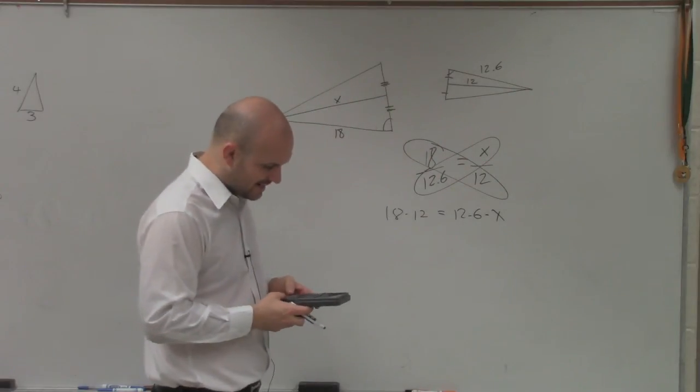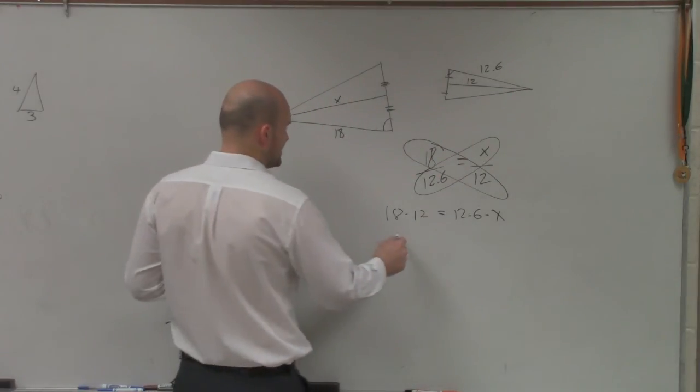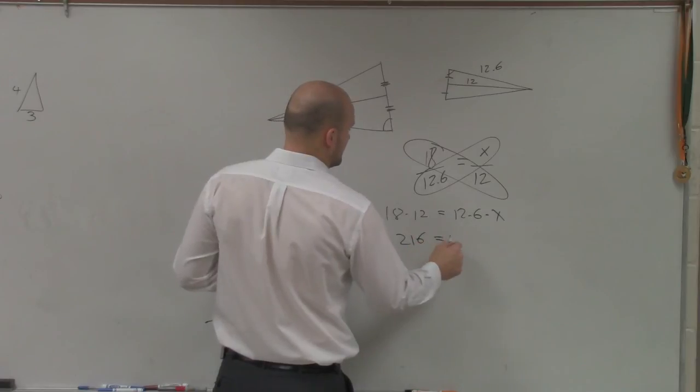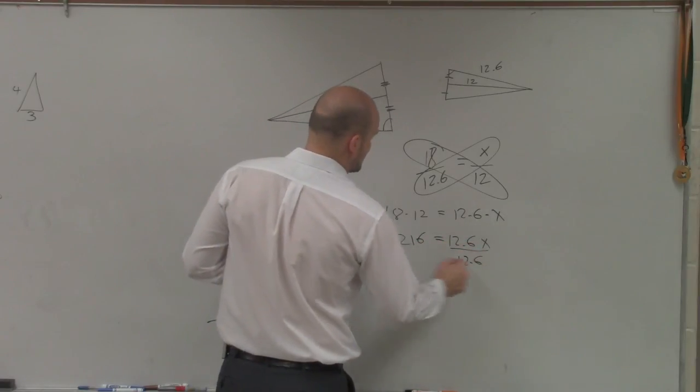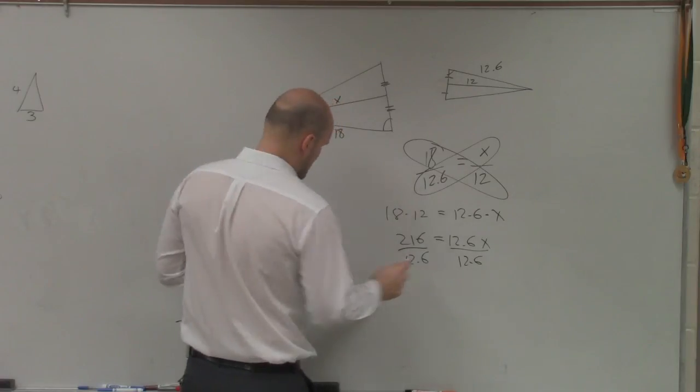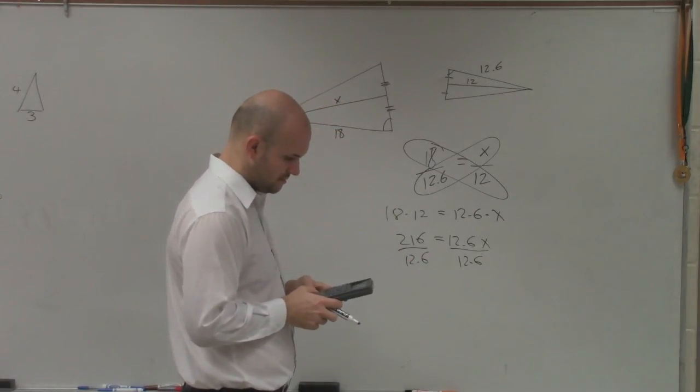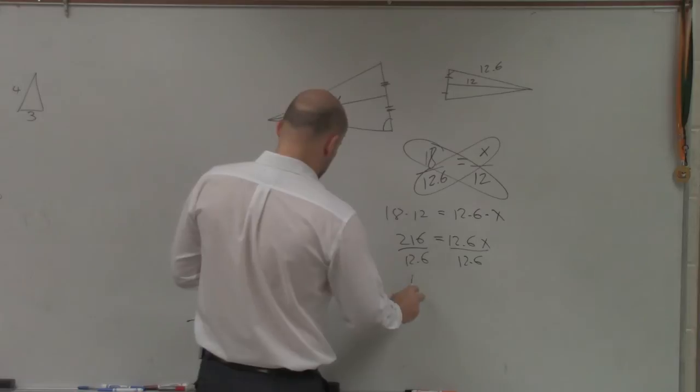So I do 18 times 12, which is 216, equals 12.6x. Divide by 12.6, and that is 17.